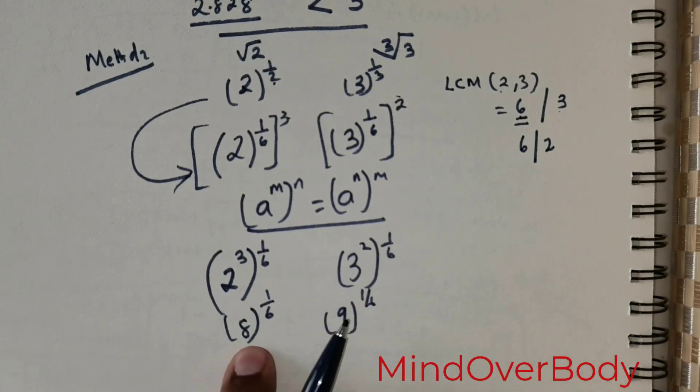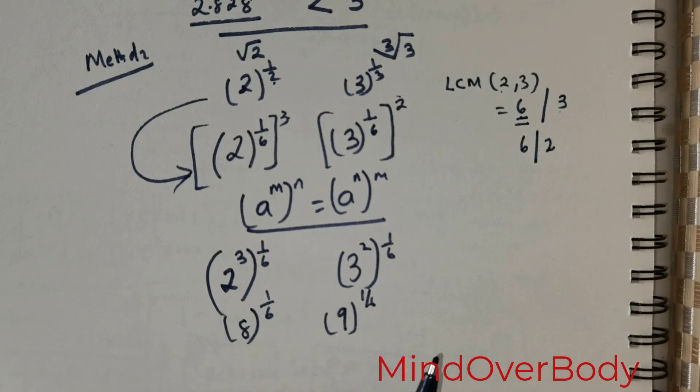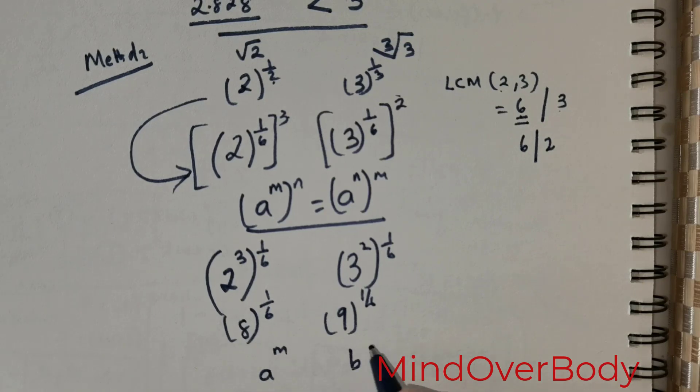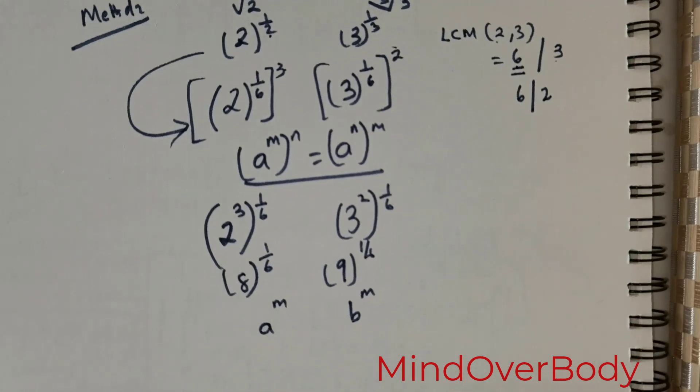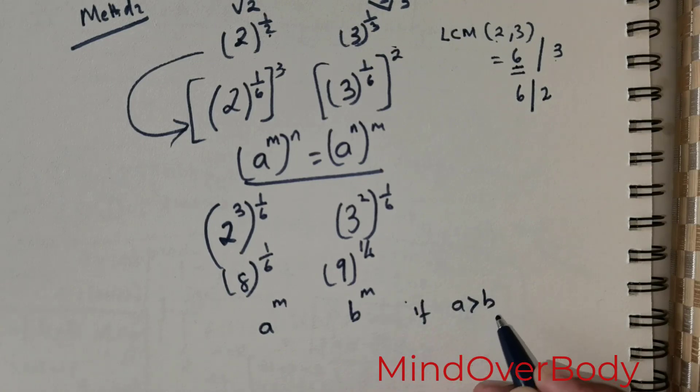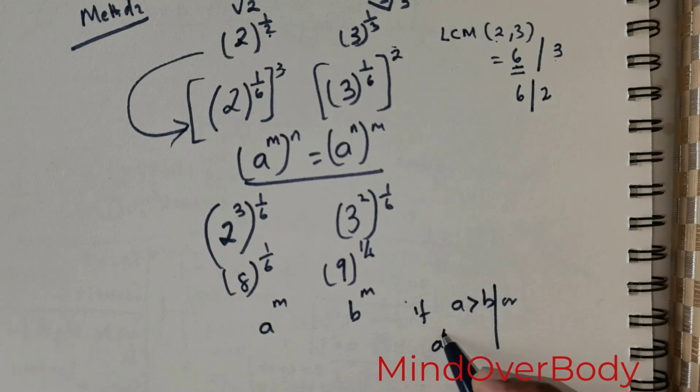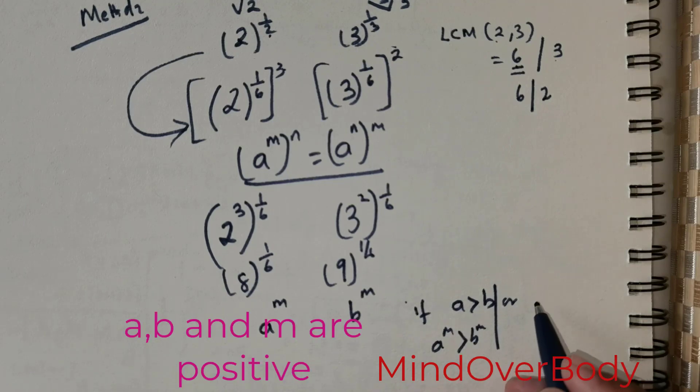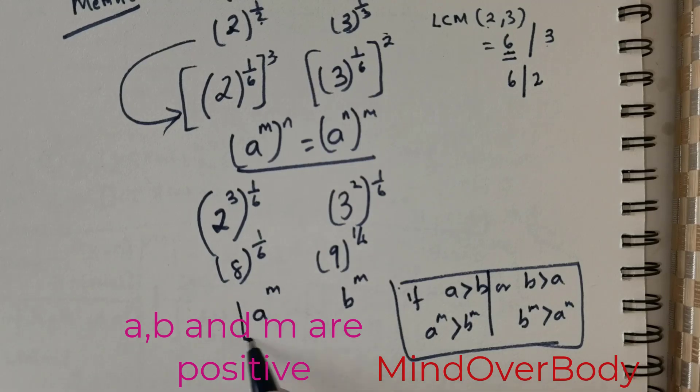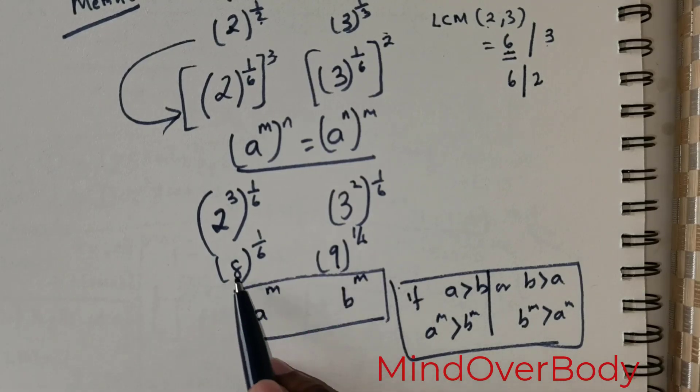Now both these quantities are positive. 8 is a positive number, 9 is a positive number. And by the law of indices, when you got a power m and you got some b power m, if they both share the same index, then if A is greater than B, then clearly A power m will be greater than B power m. On the contrary, if B is greater than A, then B power m would be greater than A power m. This is just a law of indices that you can apply. Now clearly in this case, 9 is greater than 8.